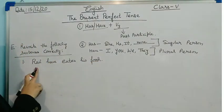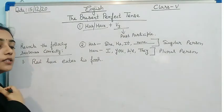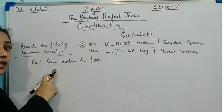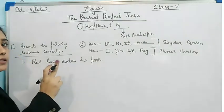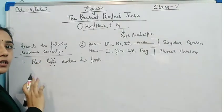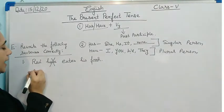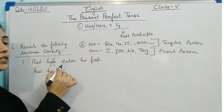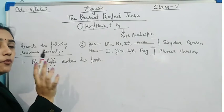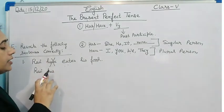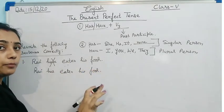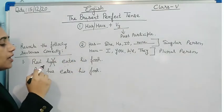Ravi is a single person, so for a singular person we use has, not have. So 'have' is wrong here. Now the verb: the past participle form is eaten — that is correct. So the corrected sentence is: Ravi has eaten his food. The mistake was only in the helping verb.